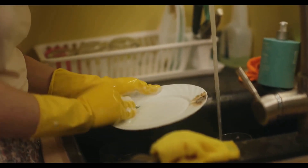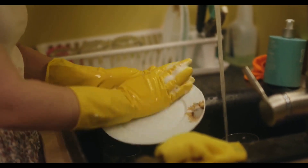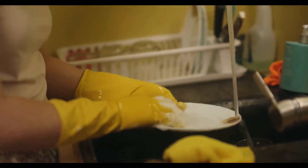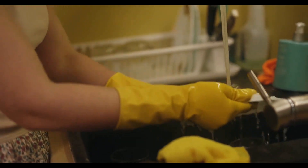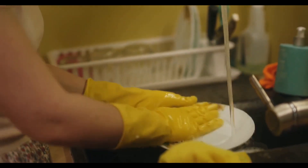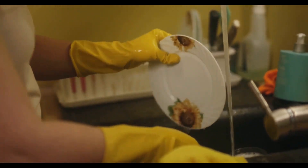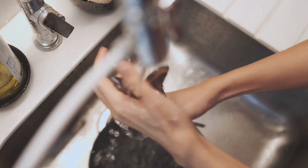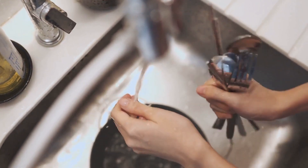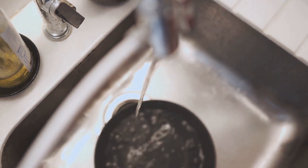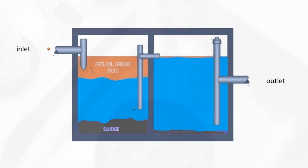A FOG grease trap, also known as a grease interceptor, is a device used to remove fats, oils, and greases — FOG — from wastewater before it enters the municipal sewer system. This helps prevent blockages and environmental issues caused by the accumulation of grease in the sewage system.